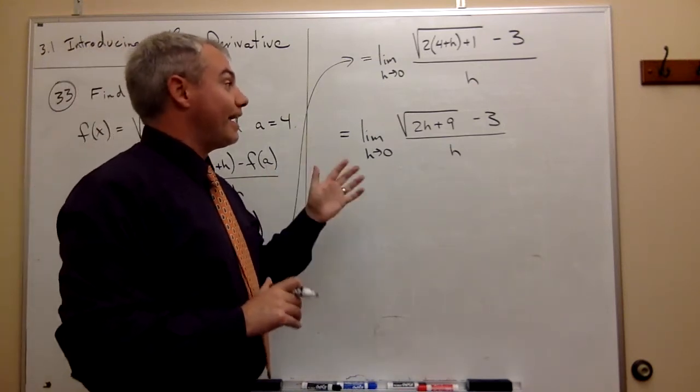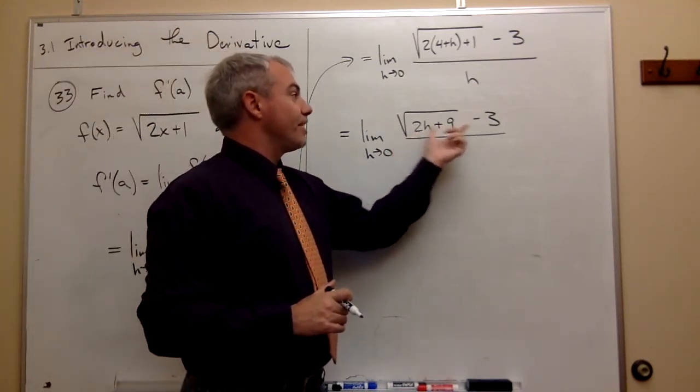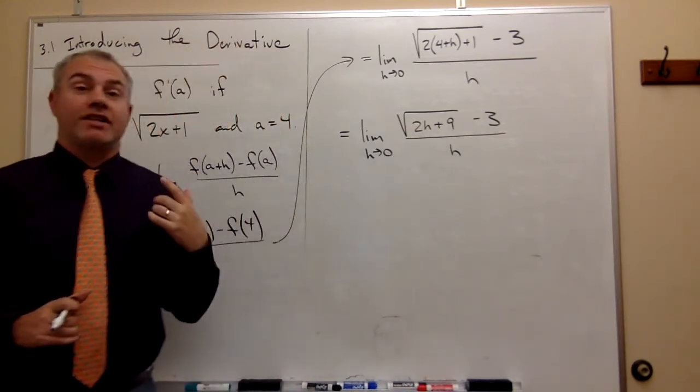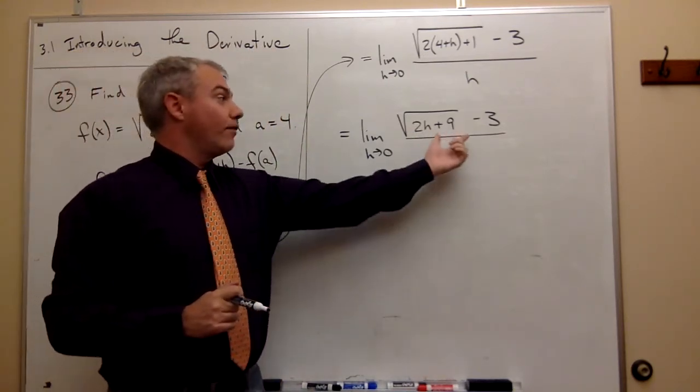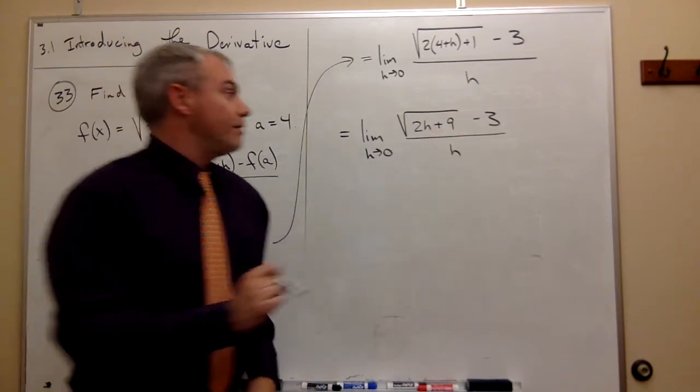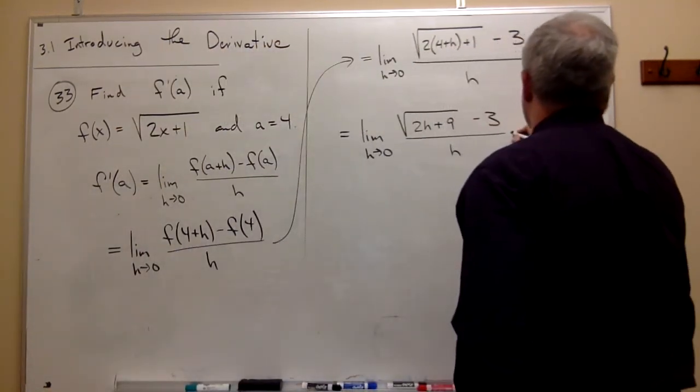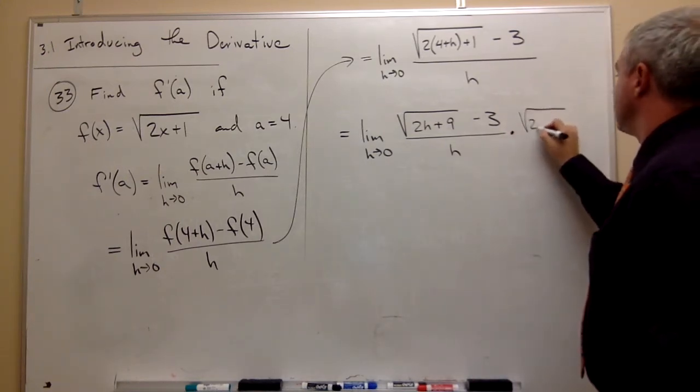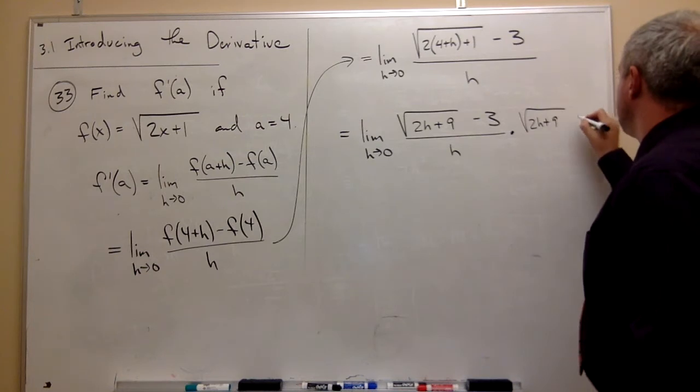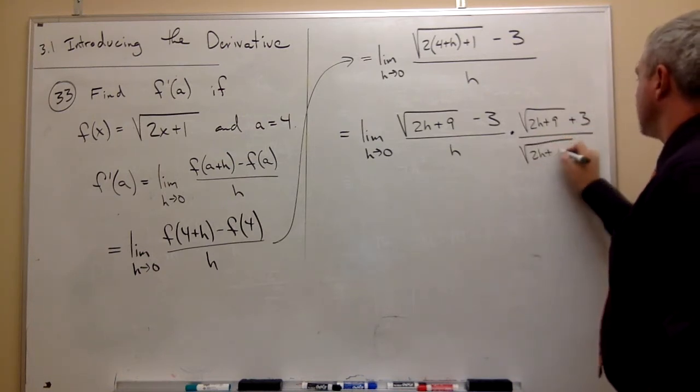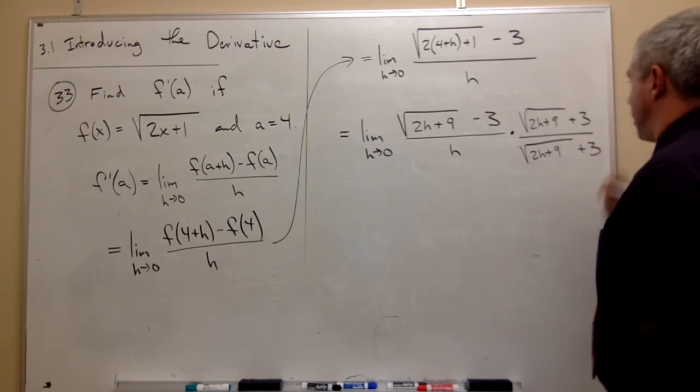Okay, so what we can do though is since this has a radical on the top, is we could multiply the top and the bottom of this thing by the conjugate of the top. And what I mean by that is let's multiply the top and the bottom by the square root of 2h plus 9 plus 3 over the square root of 2h plus 9 plus 3.